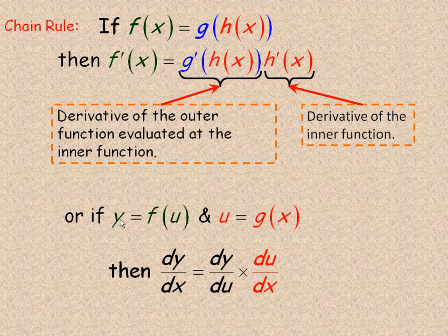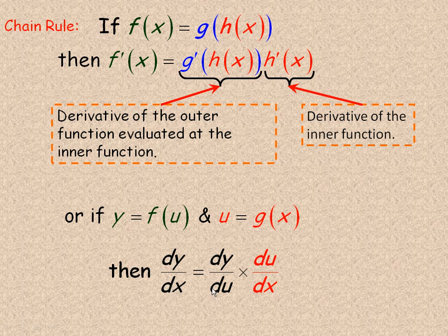Another way to write the chain rule: if y = f(u) and u = g(x), it's a composite function. The derivative dy/dx equals dy/du times du/dx — the derivative of y with respect to u, times the derivative of u with respect to x. Notice it looks like the du's divide out, though they don't actually — dy/du is one symbol, not dy divided by du. It is a helpful way to remember it: the derivative with respect to x equals the derivative with respect to the intermediate variable u, times du/dx.